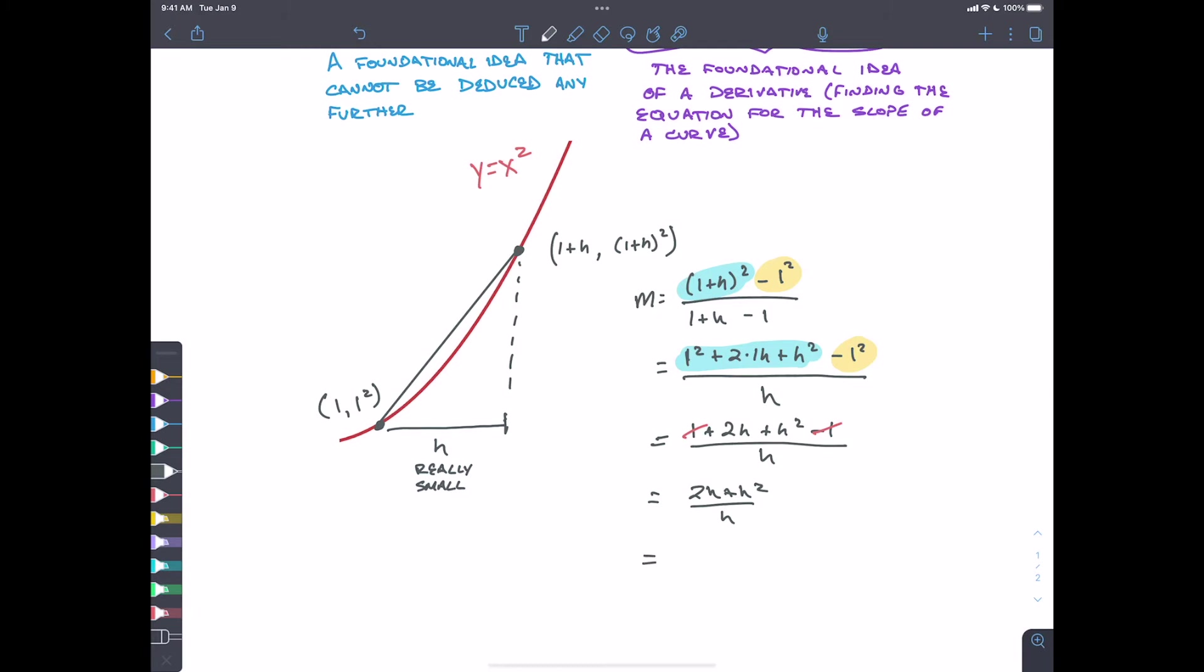Let's factor out an h. So that leaves us with two plus h over h. These things also simplify out. And so our slope that we're left with is two plus h.